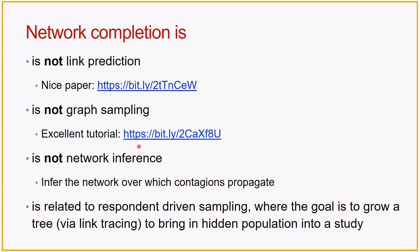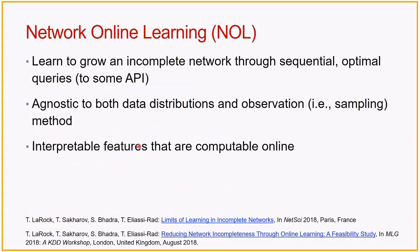In respondent-driven sampling, they do link tracing: they bring people into the clinic, give them coupons, and those people distribute coupons in their communities. We are not trying to grow a tree — we are actually trying to grow our network given a budget. Our framework is called Network Online Learning. We want to grow the network through sequential optimal queries. If I am learning to grow my network for a particular function — supervised learning or classification on this network — it also falls under online active learning.